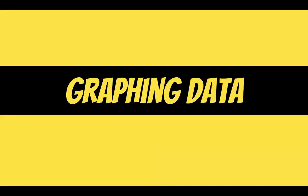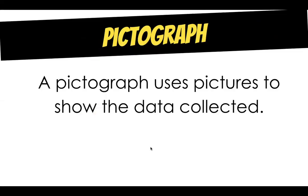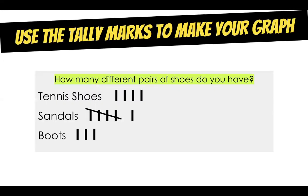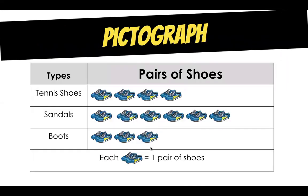Now, how do we graph data? First we're going to talk about a pictograph, which is also known as a picture graph. A pictograph uses pictures to show the data collected. You always need to make sure you use the tally marks you made to make your graphs. Here is my first pictograph. I knew I had four tennis shoes so I used four pictures of tennis shoes, six sandals, and three boots.